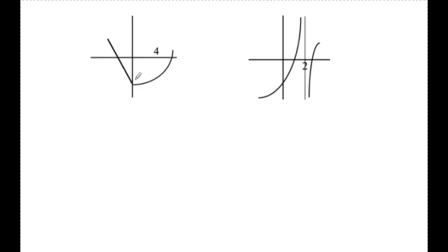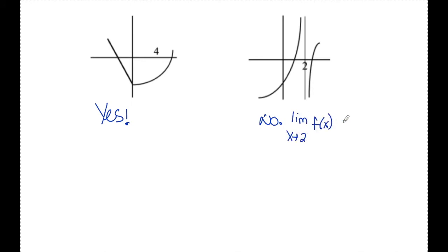Down here I can see the limit as x approaches 0 of this function exists, f of 0 exists, and those two values are equal to each other — so yes, this function is continuous. For this last one, the limit as x approaches 2 from the left is positive infinity and from the right is negative infinity. So no, this function is not continuous because the limit as x approaches 2 does not exist. We can also say that f of 2 is undefined — this looks like a vertical asymptote, so there's no y value at x equals 2.